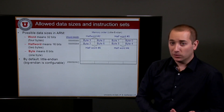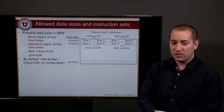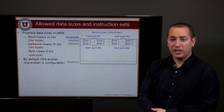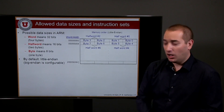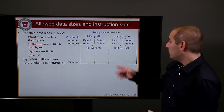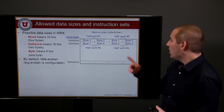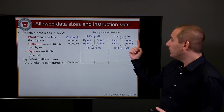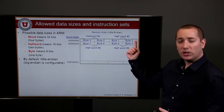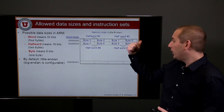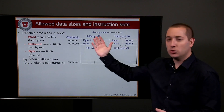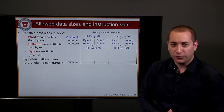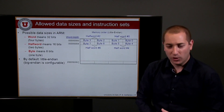By default, the organization is little-endian, but it can also be configured as big-endian. In the little-endian configuration, byte 0 is stored at address 0, with addresses 1, 2, and 3 following sequentially. The big-endian configuration is the opposite.